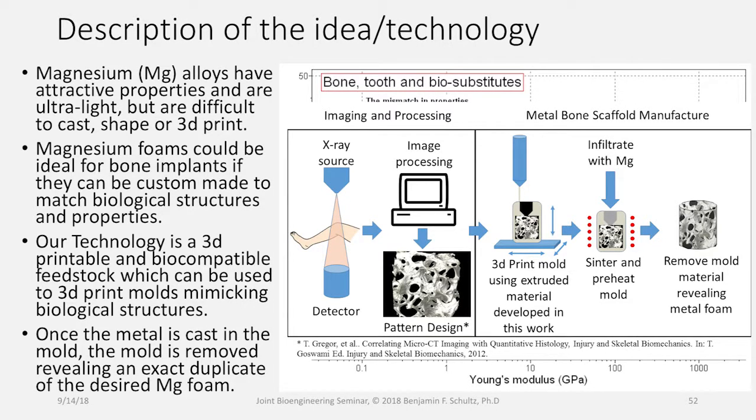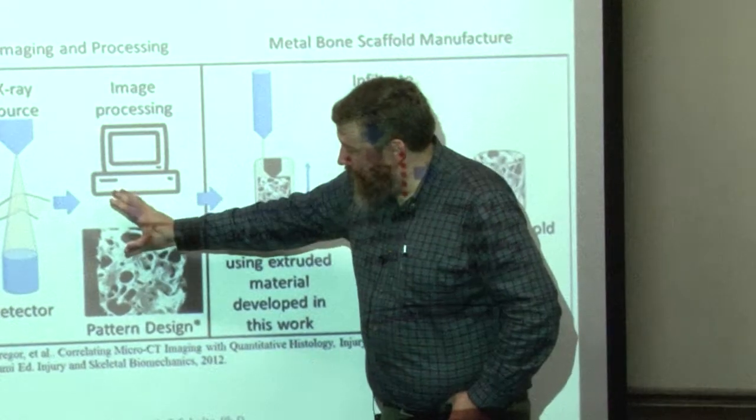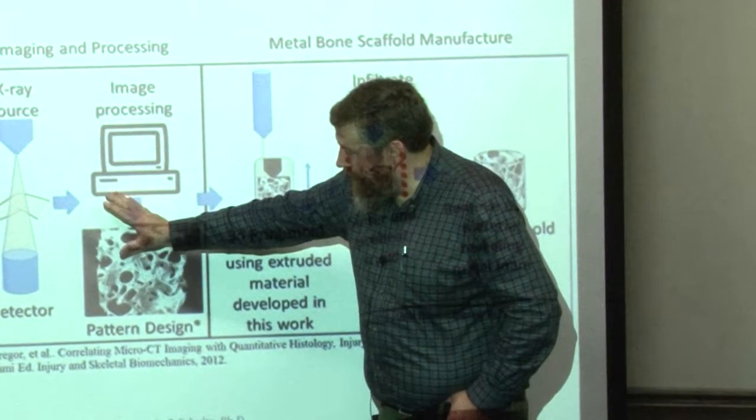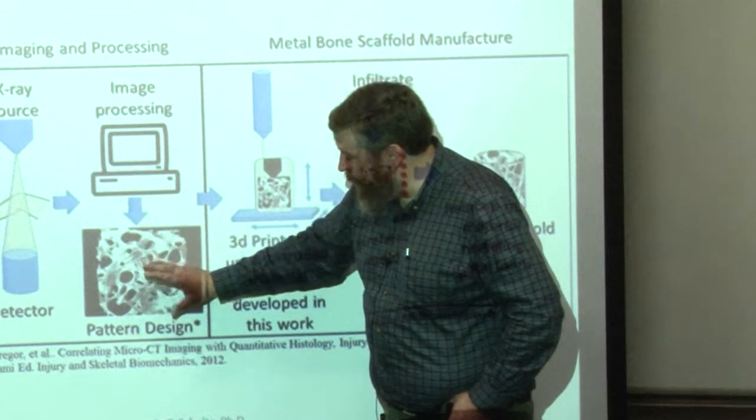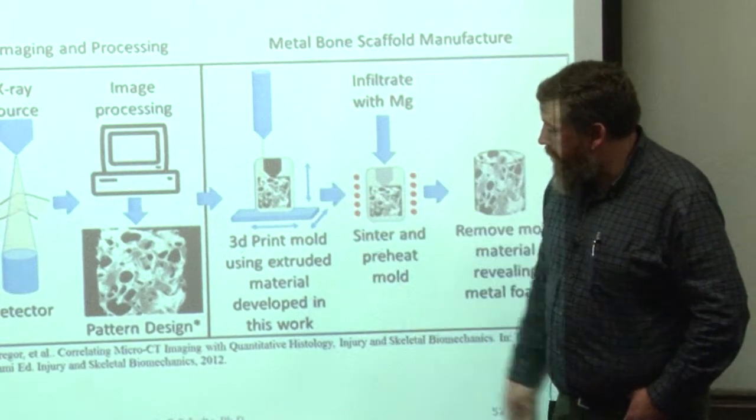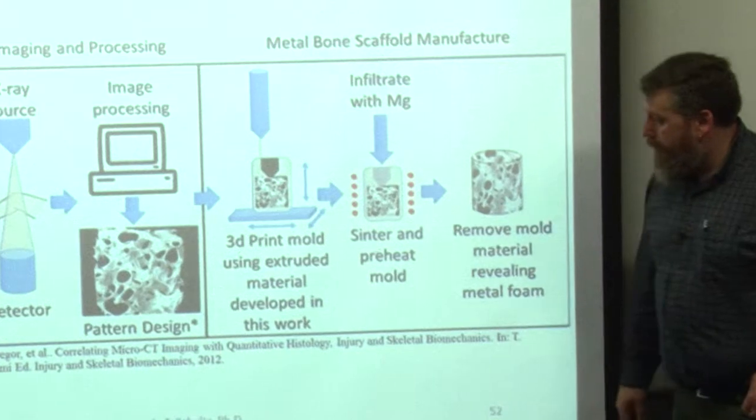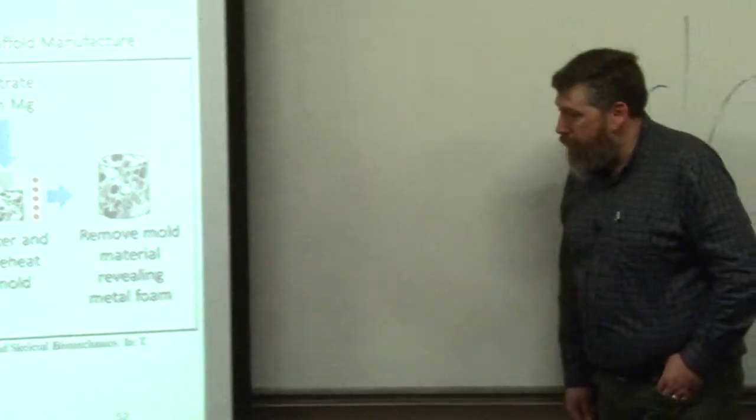So the metal foams could be within this region shown at the dash marks. The technology I'm developing would allow us to take some CAD model based on a scan of somebody's bone. Take that to create a pattern which we can 3D print and then finally cast liquid magnesium into it. Remove that pattern and we have a magnesium bone scaffold.